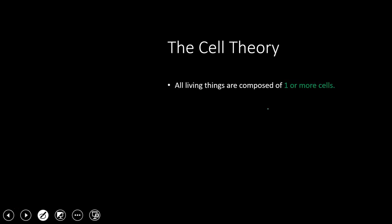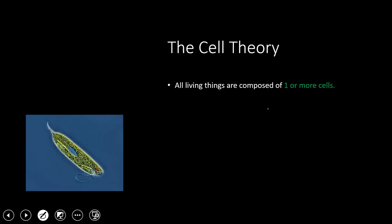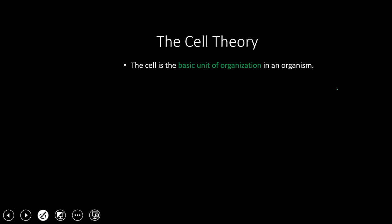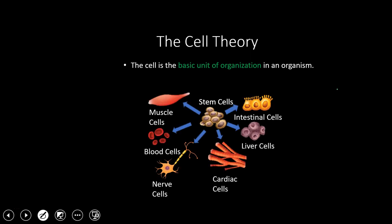Part two: all living things are composed of one or more cells. If you're living, you're at least one cell. And if you're more than one cell, those cells form the different parts of your body. Part three: the cell is the basic unit of organization in an organism. All the different structures of your body are made up of different types of cells — all the different organs, all the different tissues, they all go back to the cell. Your muscles are made up of muscle cells, your blood is made up of blood cells, your brain and spinal cord are made up of nerve cells. That is the three parts of the cell theory.